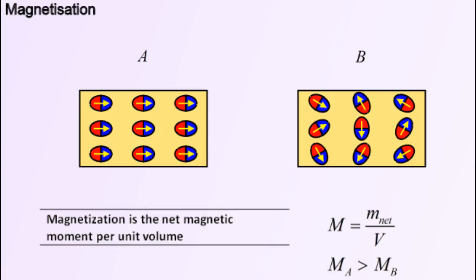Take the case of these two metals. In metal A, the magnetic moments are all aligned, whereas they are not all aligned in metal B. So, the net magnetic moment of A is greater than the net magnetic moment of B. A and B have equal volumes. For metals, magnetization is defined as the net magnetic moment divided by the volume. So, the magnetization of A is greater than the magnetization of B.